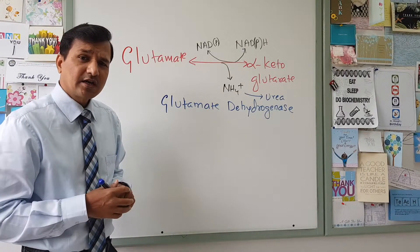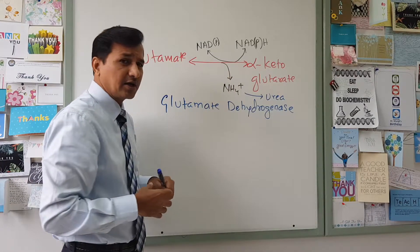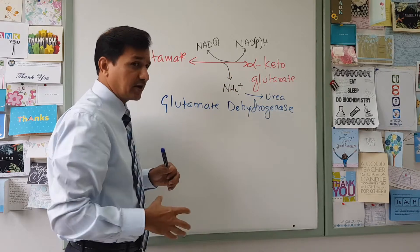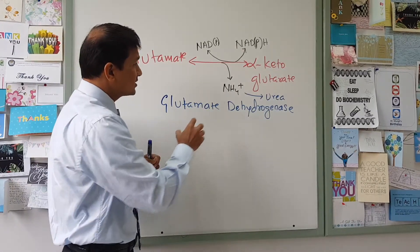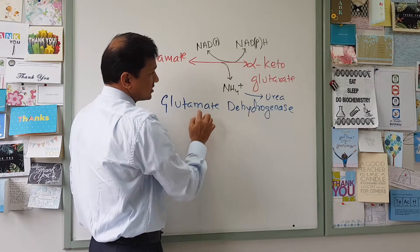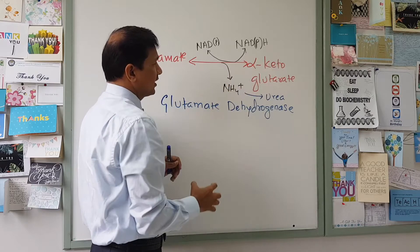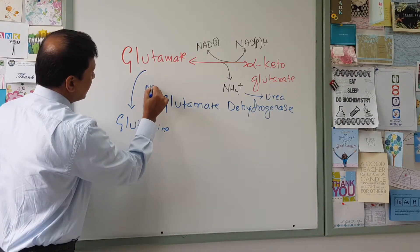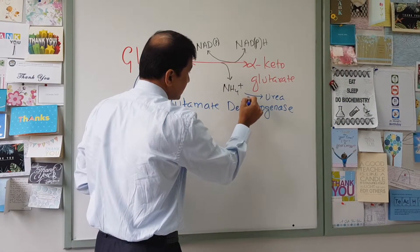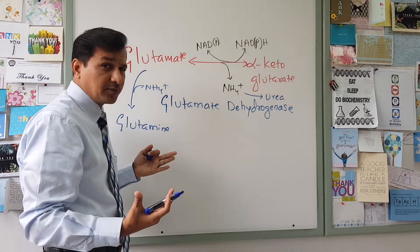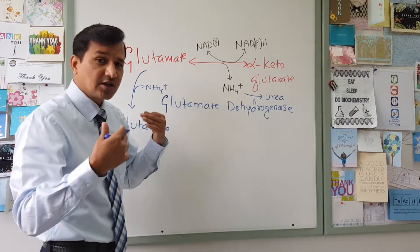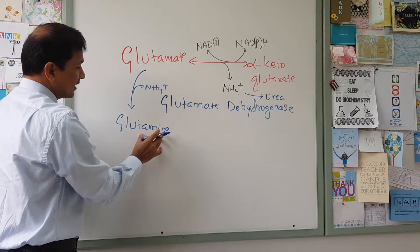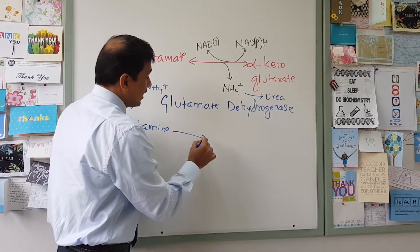When the urea cycle becomes saturated, ammonium ion accumulates in the liver in toxic form. In that situation, glutamate dehydrogenase in the liver fixes the excess ammonium ion to alpha-ketoglutarate to make glutamate, and glutamate can take up one more ammonium ion to become glutamine via glutamine synthetase. The liver then secretes this glutamine into the blood, and it travels to the kidney.